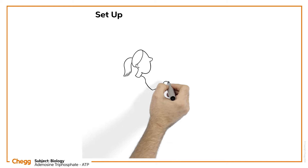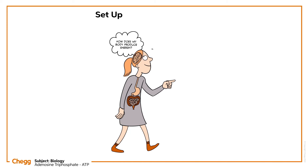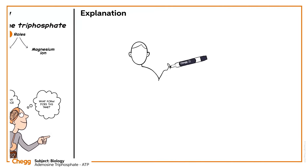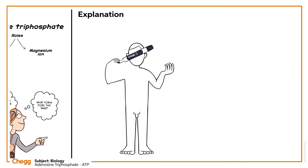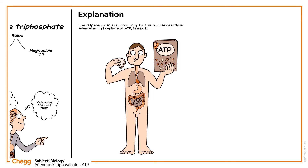For the fundamental physiological functions that are essential for our survival, we all require energy. You may have thought about how our bodies produce this energy and what form this energy takes. The only energy source in our body that we can use directly is adenosine triphosphate, or ATP in short. Before it can be used for other processes, the body transforms all ingested nutrients into ATP.